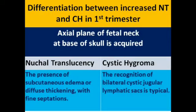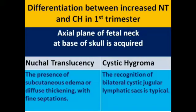The main differentiation of cystic hygroma in the first trimester is with nuchal translucency. We acquire the axial plane of the fetal neck at the base of the skull. In the case of nuchal translucency, the presence of subcutaneous edema or diffuse thickening with very fine septations may be present, while cystic hygroma will be recognized by bilateral cystic jugular lymphatic sacs, which is a typical finding for cystic hygroma.